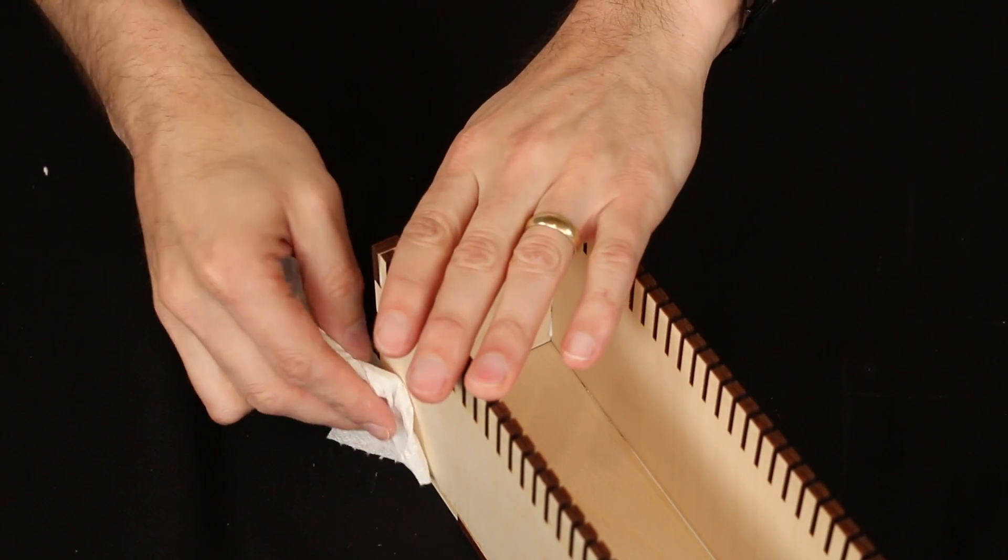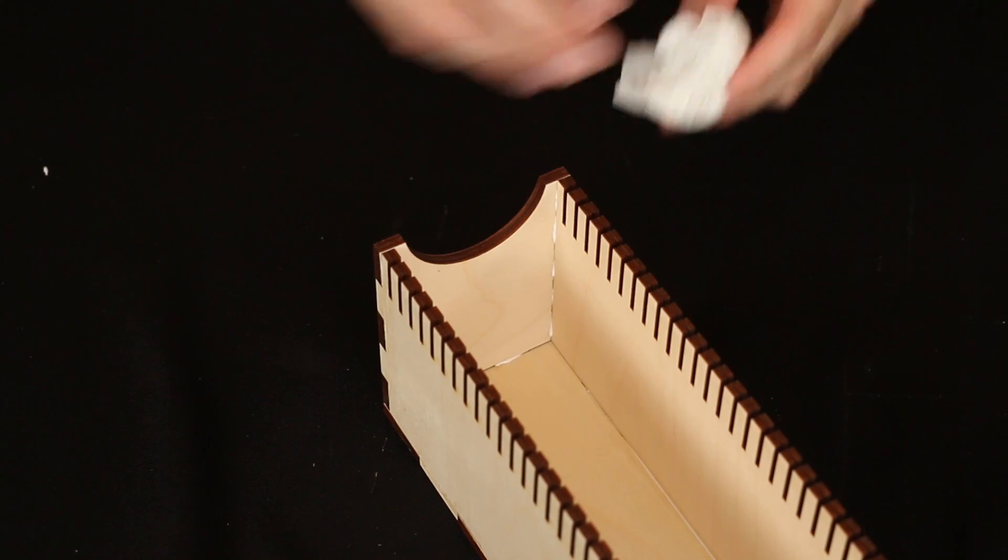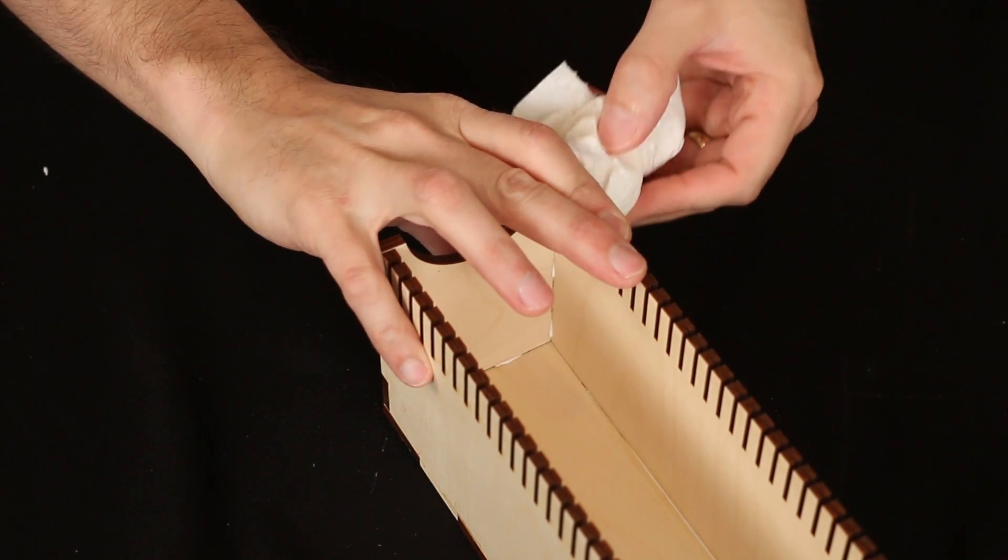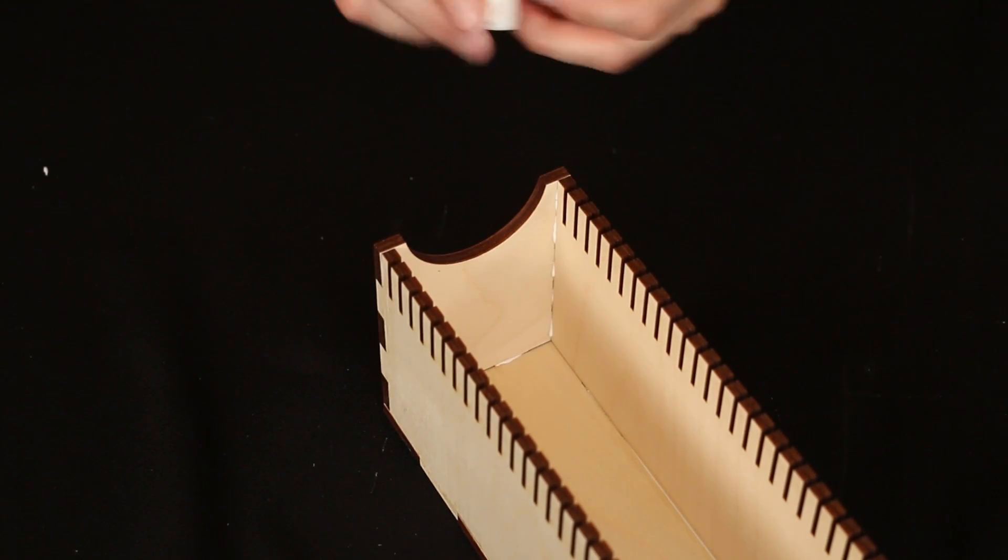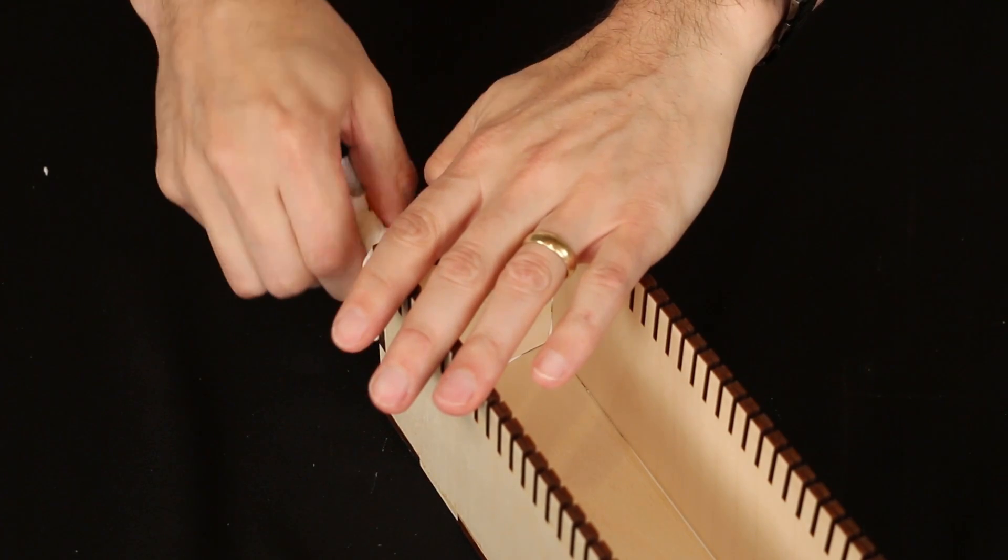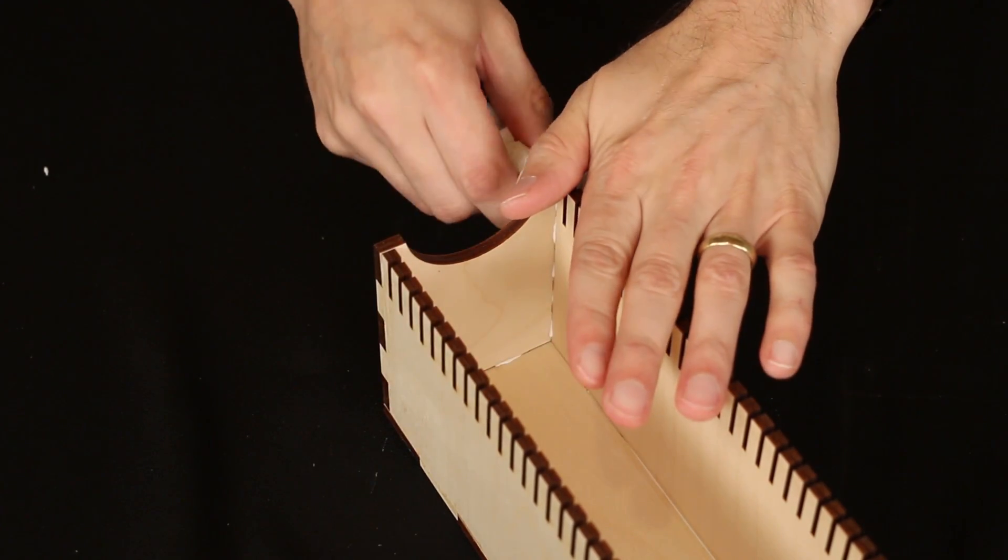And as before, you're going to want to clean up any of the excess glue. If you have trouble reaching into these tight corners, then a little Q-tip can work just as well. Just reach it in there and swipe the inside corners.